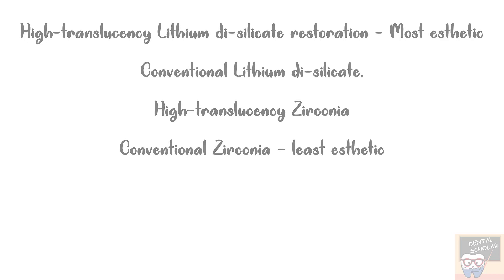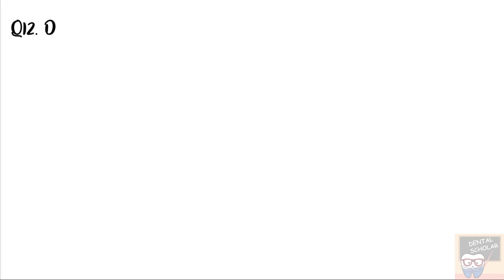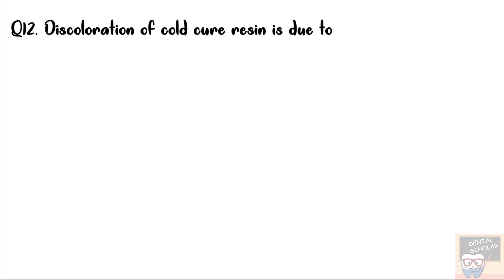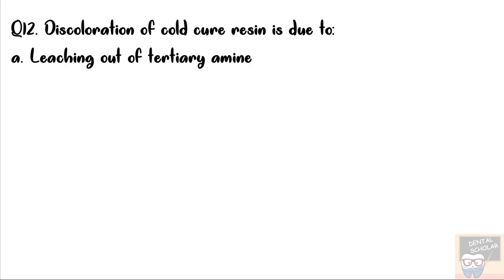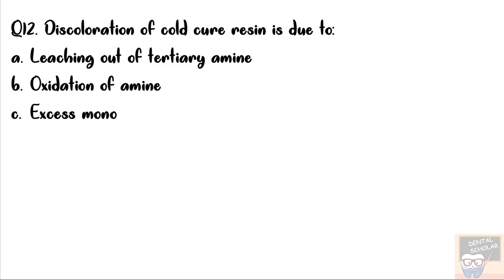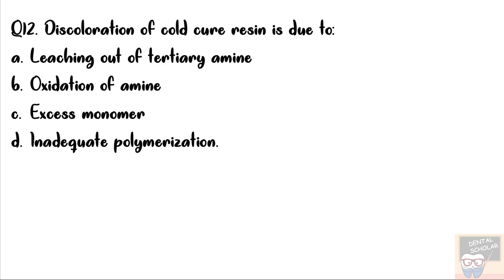Let's now go to question number 12. Discoloration of cold cure resin is due to — the options are: leaching out of tertiary amine, oxidation of amine, excess monomer, and inadequate polymerization. The correct answer is option B, oxidation of amines.